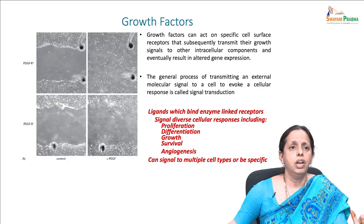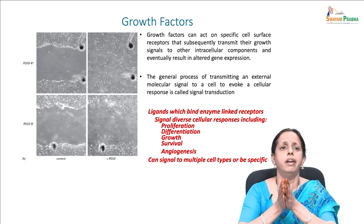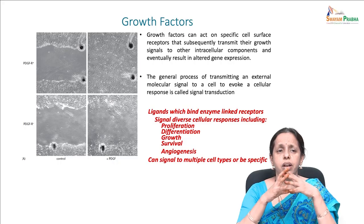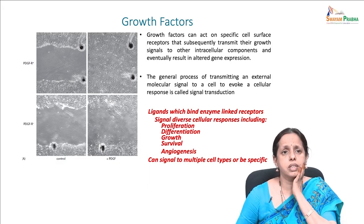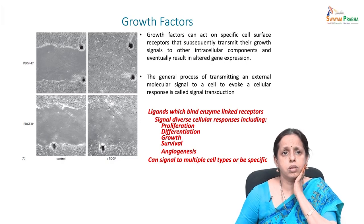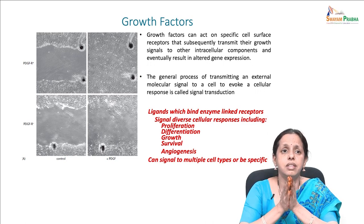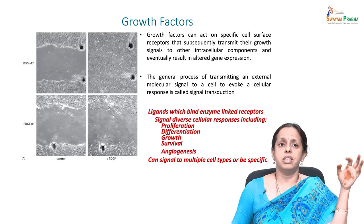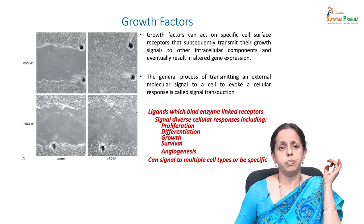You grow a platelet-derived growth factor receptor-positive cell line and a negative cell line. After giving a scratch and adding your growth factor — platelet-derived growth factor — to the growth medium, you see the wound heals; there is migration of cells towards each other. Whereas in the cell line where there is no receptor, the cells do not migrate — the fibroblasts are not responsive to the addition of the growth factor, clearly showing the importance of the growth factor receptor in this experiment.